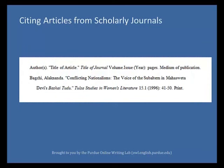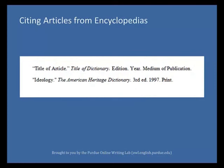To cite an article from a scholarly journal, list the author's name, last name first, followed by a period. Then include the title of the article in quotation marks, followed by a period. List the title of the scholarly journal in italics. Indicate the volume and issue numbers, separated by a period. Include the year in parentheses, followed by a colon, and the pages of the article, followed by a period. Finally, indicate the medium of publication, followed by a period.